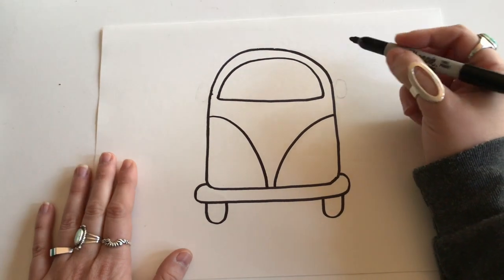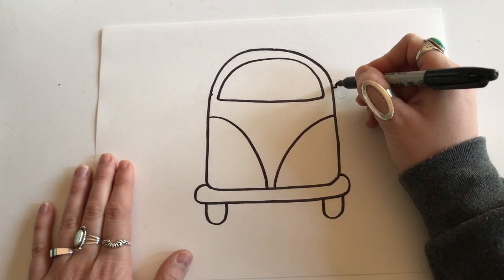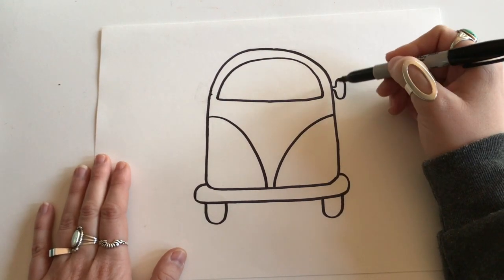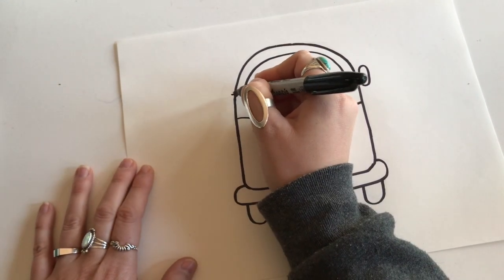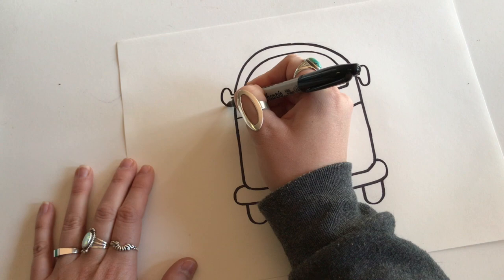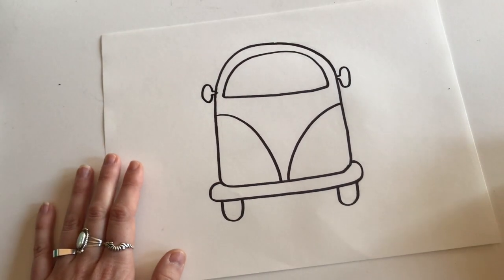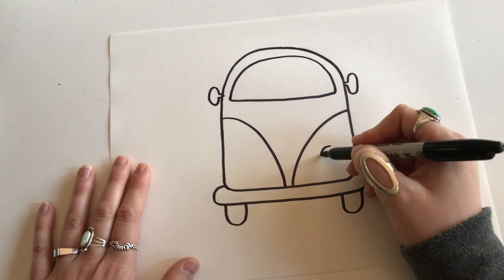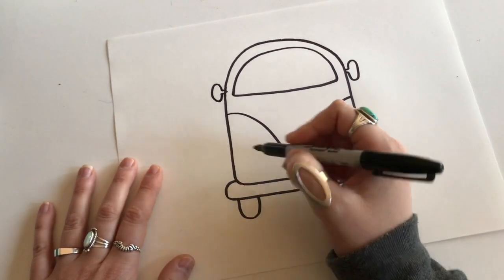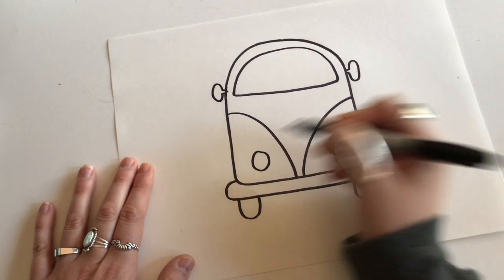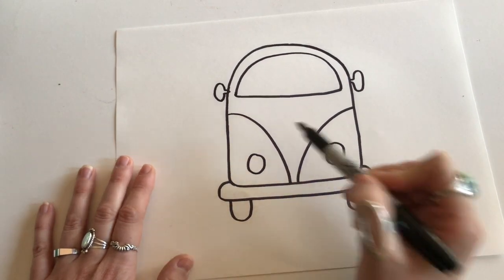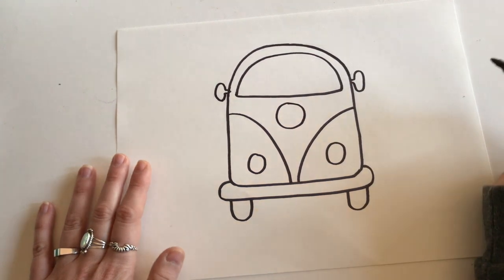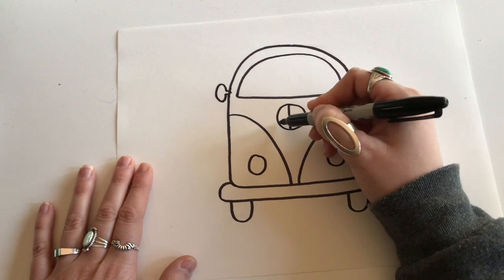I'm gonna draw two little mirrors sticking off the side, kind of looks like an ear but it's like an oval shape. I'm gonna do one on this side too. So there's my mirrors. Okay, and then we have two headlights, one here just a circle and one here, another circle. Beautiful. And then right in the middle of our bus we have our symbol, our Volkswagen symbol, but today we are actually going to do a peace sign in the middle.